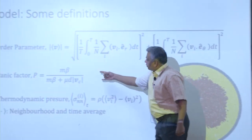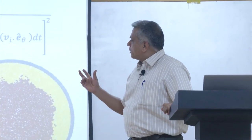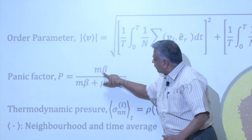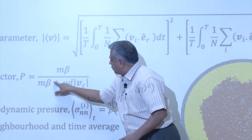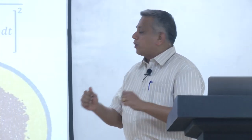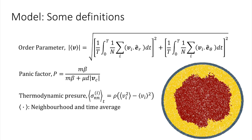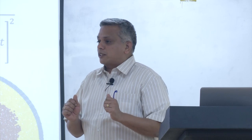We also define a panic factor, first invoked in the literature by Helbing in 2004, which we redefined to be more general. This beta is an acceleration of the individual particle, and the panic factor is the ratio of an individual's desire to move in a chosen direction as a fraction of the total desire — individual desire plus where the crowd will take the person — dictating how dominant the crowd is over the individual. Finally, we define a thermodynamic pressure as the variance of velocity calculated from an immediate neighborhood, telling us the randomness in motion around a given individual.